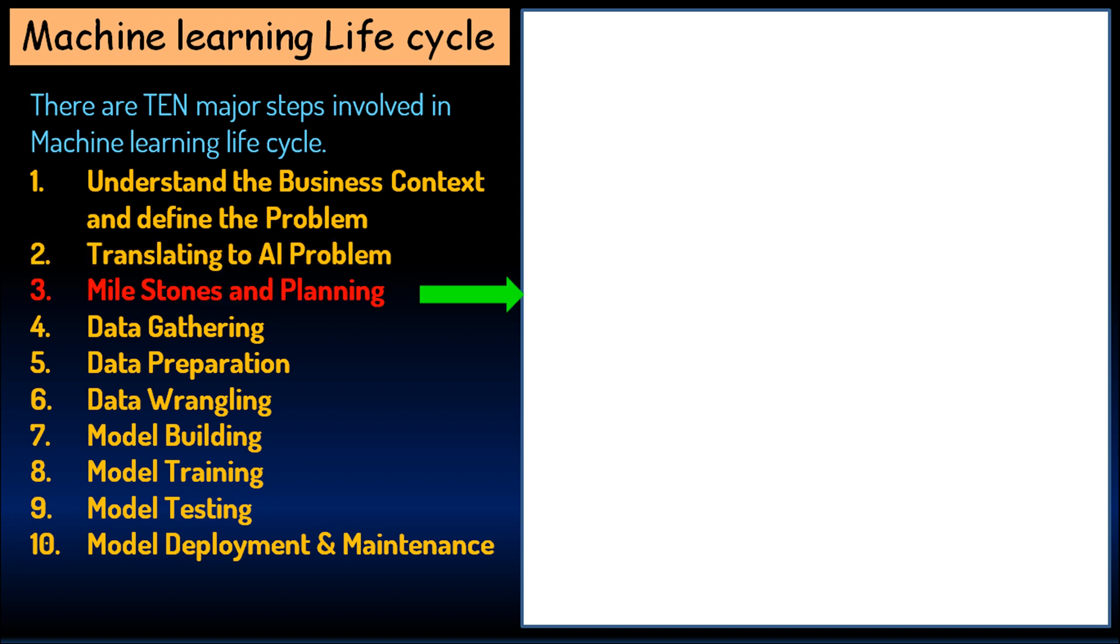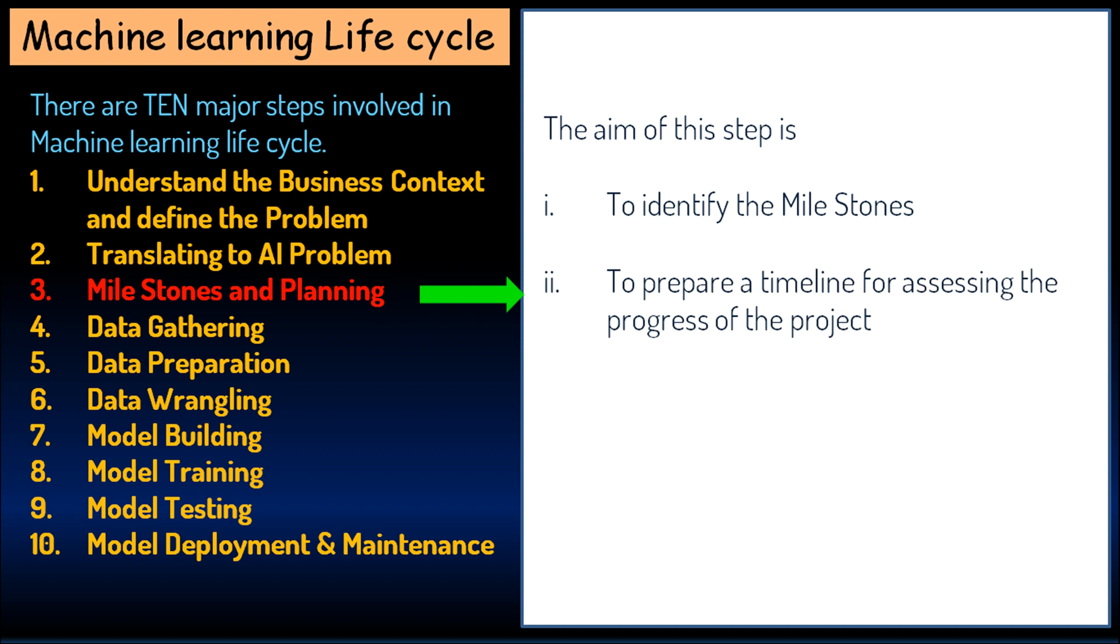The third step is milestones and planning. The aim of this step is to identify the milestones, to prepare a timeline for assessing the progress of the project, to develop resource planning, and to identify deliverables.